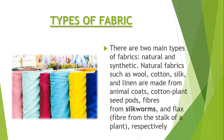There are two types of fabrics: natural and synthetic. Natural fabrics such as wool, cotton, silk, and linen are made from animal coats, cotton plants, seeds, and fibers from silk wound and flax fiber from the stalk of a plant respectively.